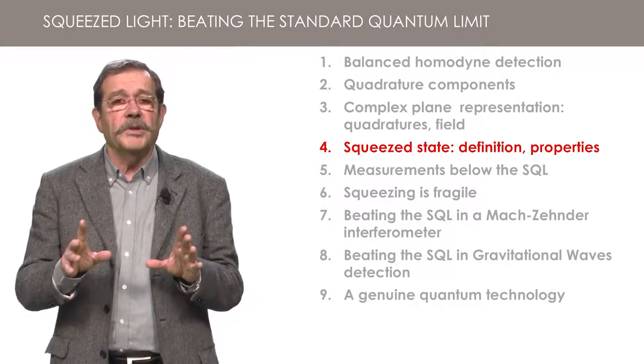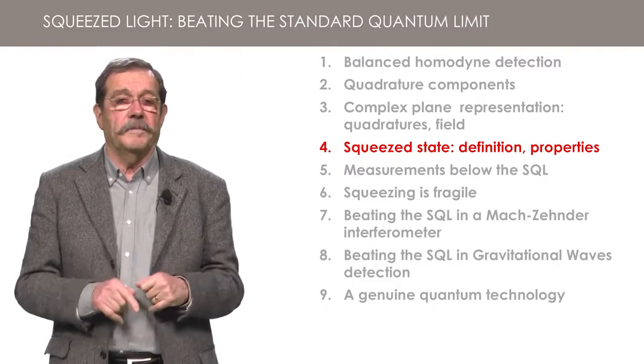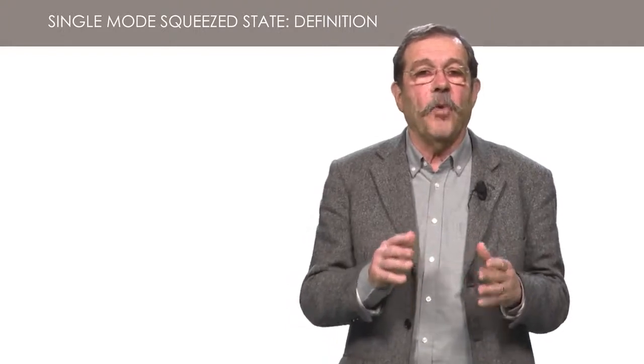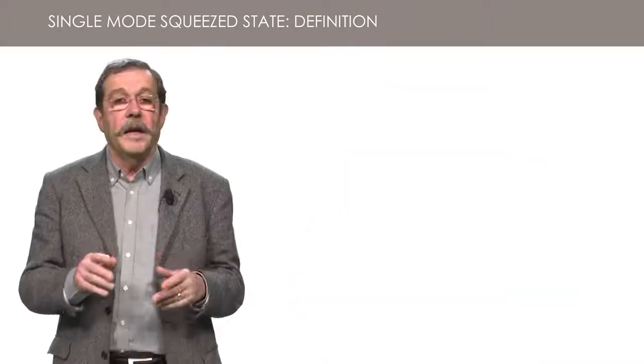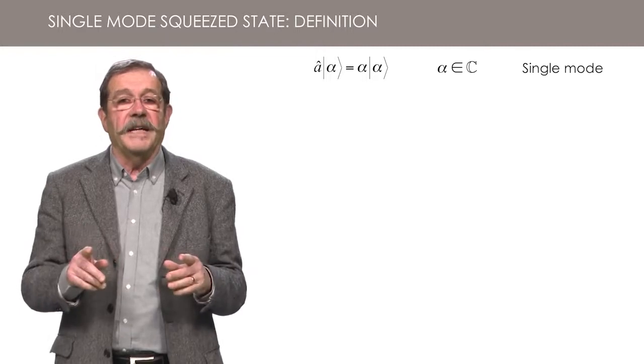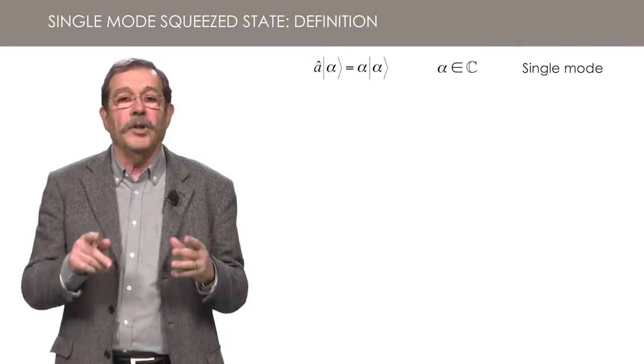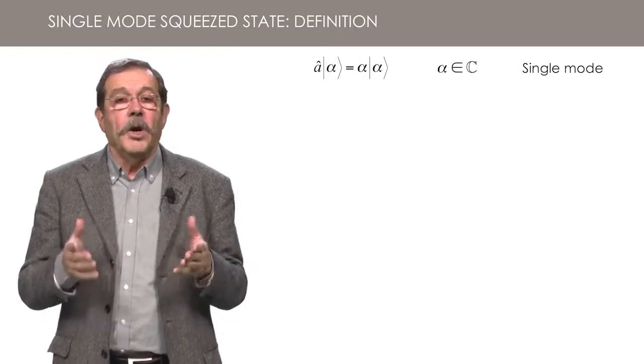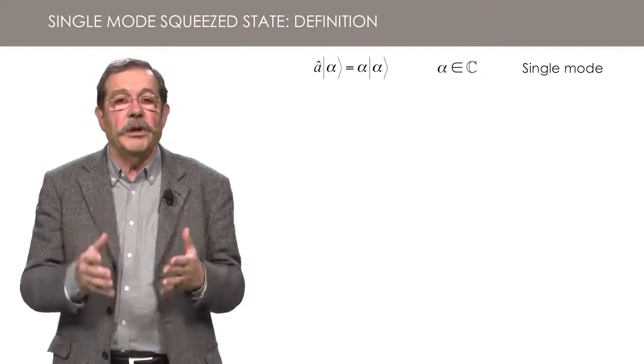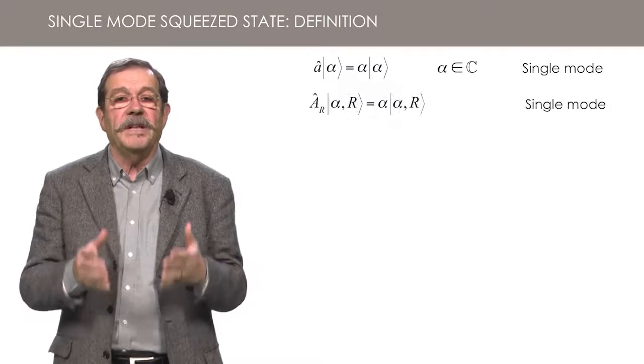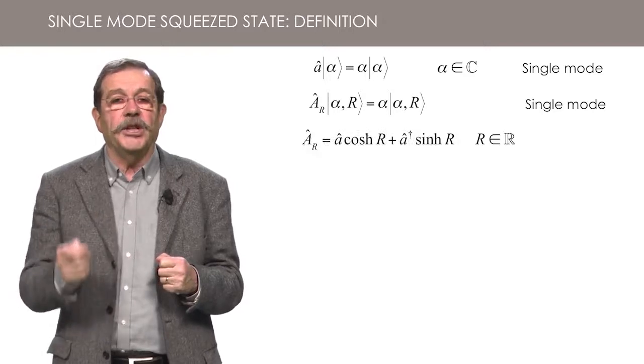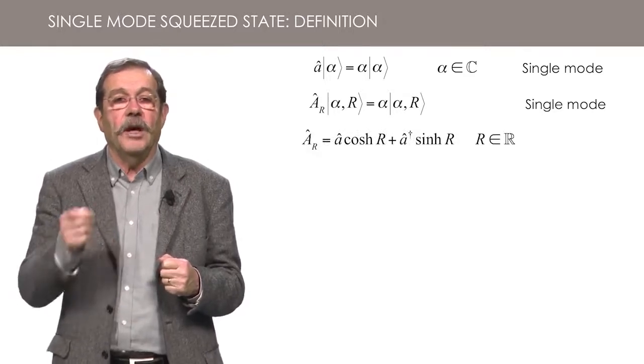Non-linear optics will be the subject of a future lesson in this course. A simple way to define squeezed states is to generalize the definition of quasi-classical states. You remember that a single mode quasi-classical state alpha is defined as an eigenstate of the annihilation operator. Similarly, a single mode squeezed state is defined as an eigenstate of a generalized annihilation operator capital A hat, which is a combination of the annihilation and creation operators A and A dagger of the mode.